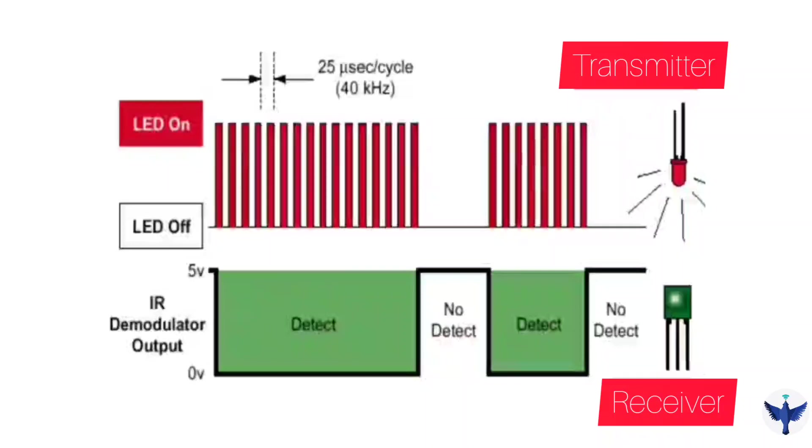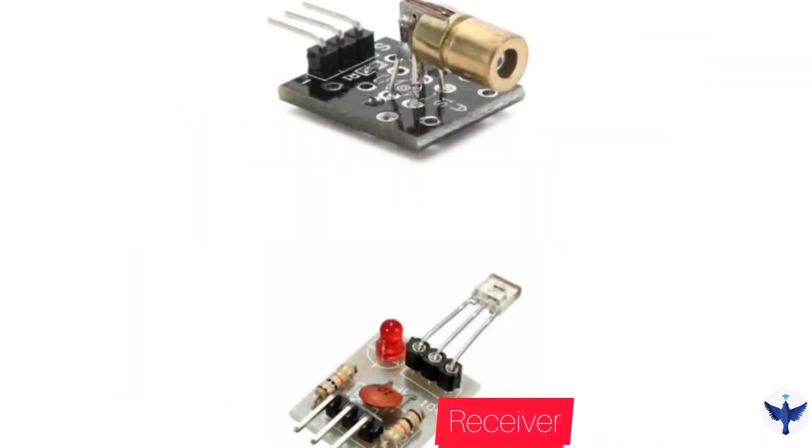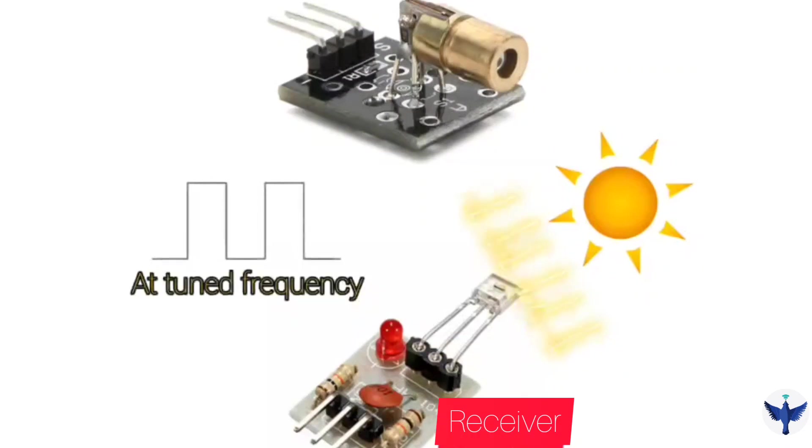So now the receiver won't receive or won't give any signal to the stray lights. It would only detect the modulated signal that is given through the transmitter.